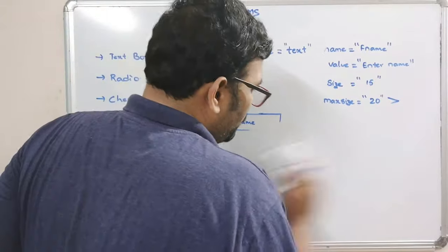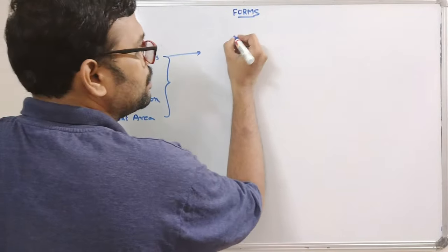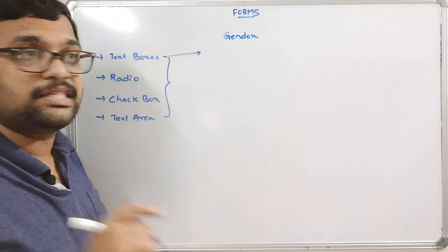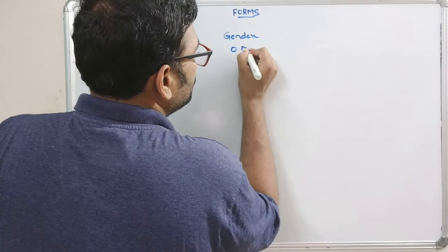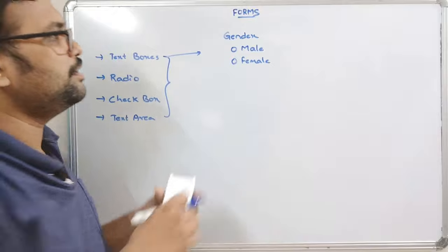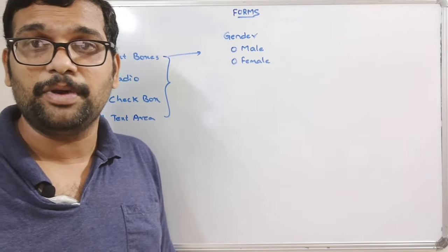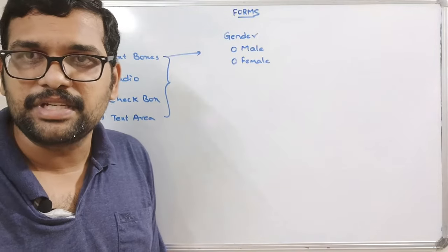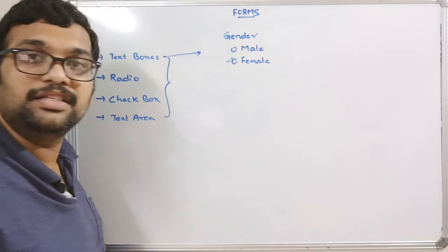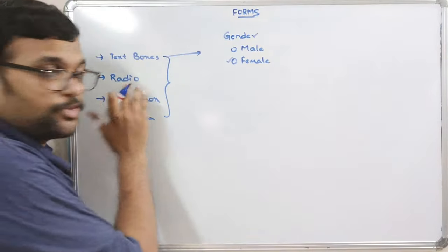The next one is radio buttons. The representation of a radio button is a circle. The best example for radio buttons is gender. You can see a circle followed by 'male' and another circle followed by 'female'. The user has to select either male or female but not both — that is the feature of the radio button. Only one selection can be done; multiple selections are not allowed. If you select male, female is disabled, and vice versa.